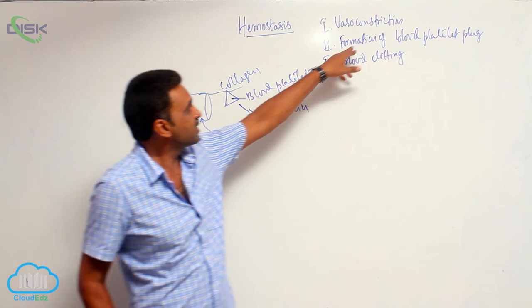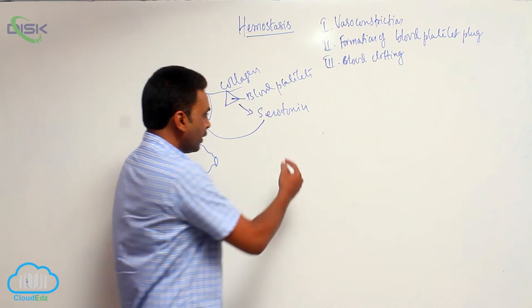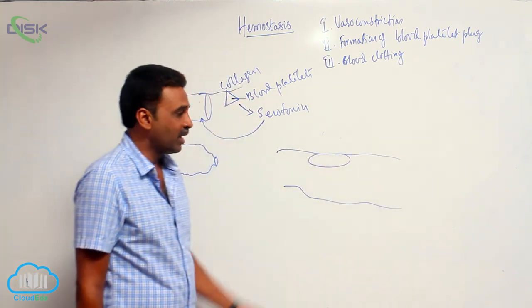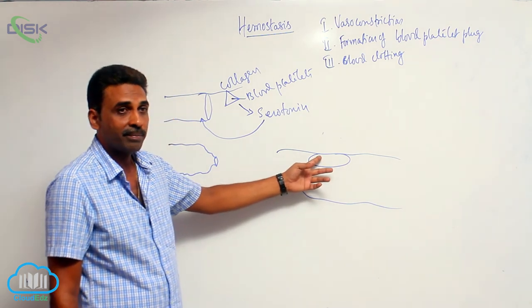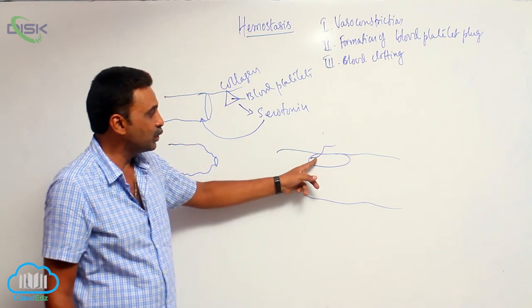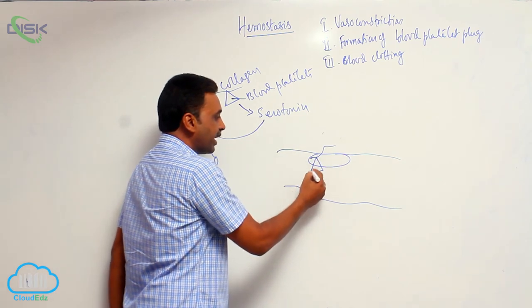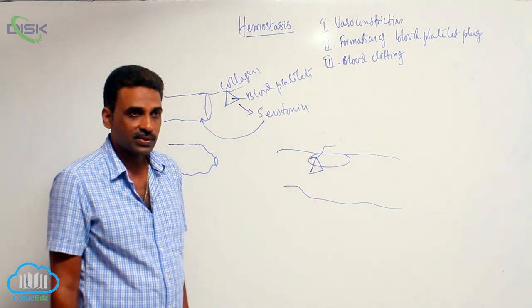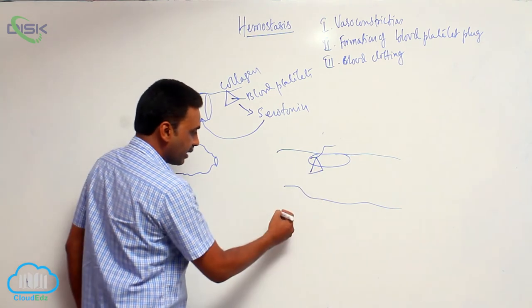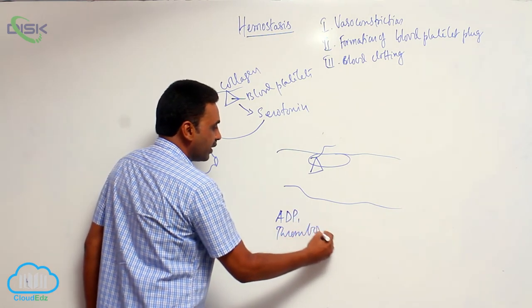The second mechanism is called formation of a blood platelet plug. Whenever there is a minor injury, collagenous fibers are exposed in the injured area. Blood platelets come and attach to the collagenous fibers, and the blood platelets release other chemicals — ADP (adenosine diphosphate) and thromboxane A2.